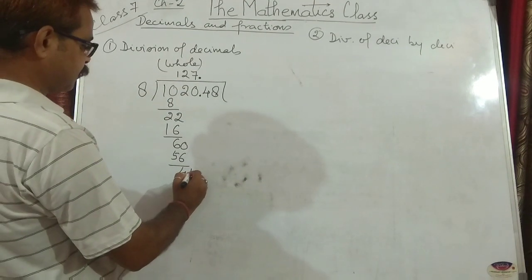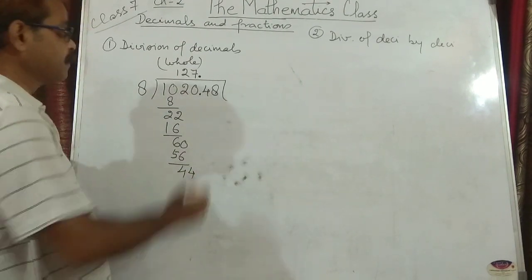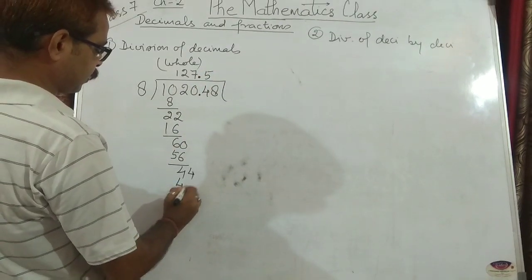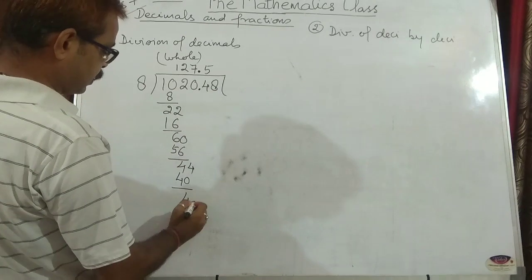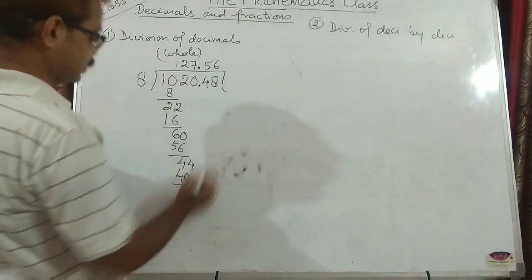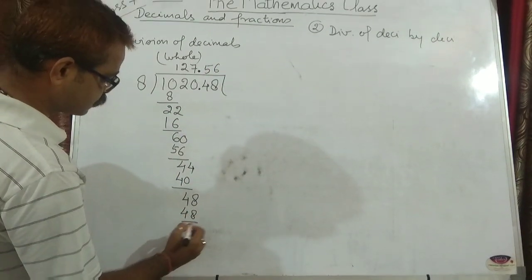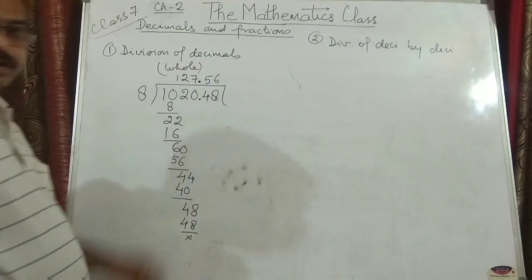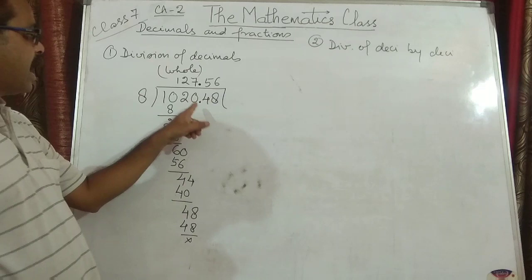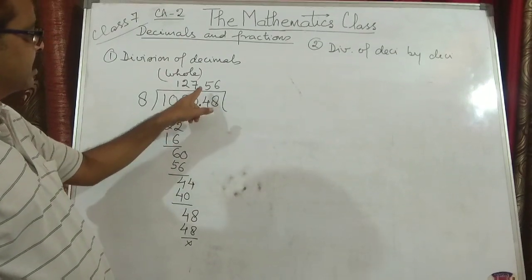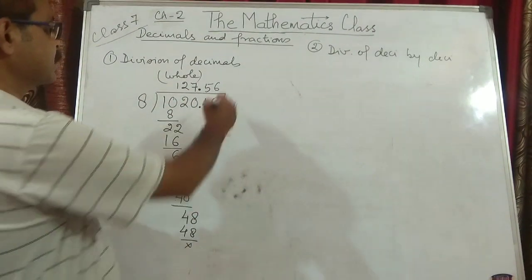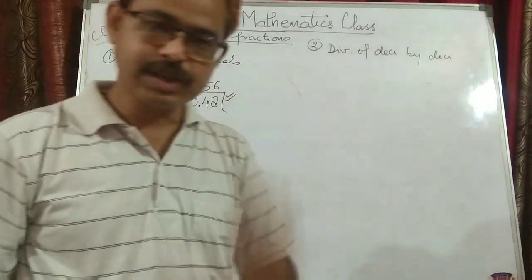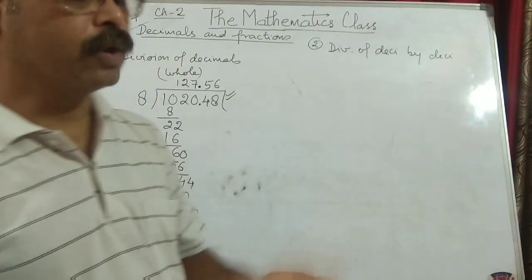And then we will proceed. 44. So 8 into 5 is 40 — remainder 4. What you need to remember: when we are dividing, you divide in a proper manner and only at the place of the decimal in the dividend do we place the decimal in the quotient. This is how we divide a decimal number by whole numbers.